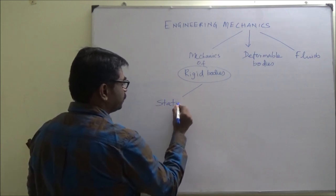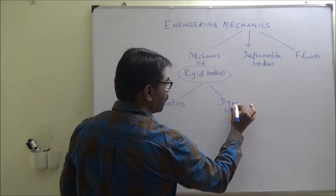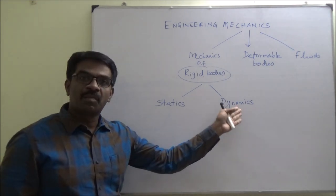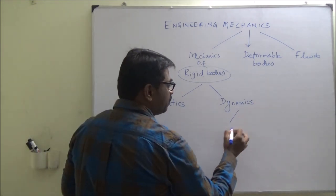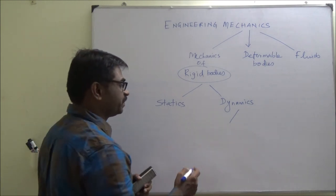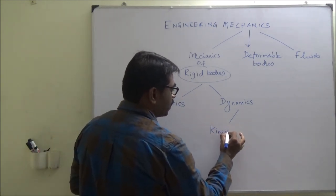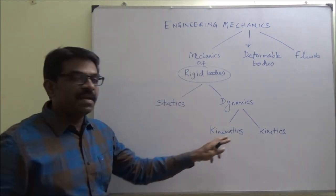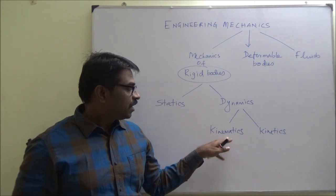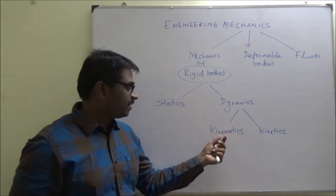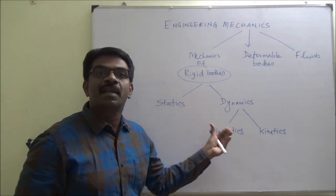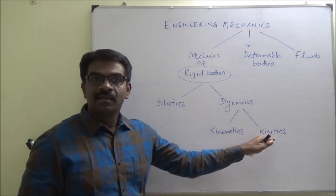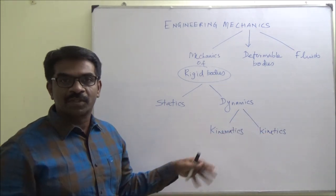What is statics? The bodies at rest. Dynamics: the bodies in motion. The bodies in motion can be further classified into Kinematics and Kinetics. What does it mean? Kinematics — if you are not considering the force that is causing the motion, that is Kinematics of the rigid body. Kinetics — the one which is considering the force also. If you are not considering the force, then what it means is...